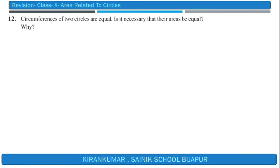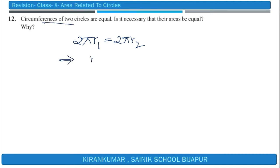Question 12: If the circumferences of two circles are equal, is it necessary that their areas are also equal? Let r₁ and r₂ be the radii of the two circles. Since their circumferences are equal, 2πr₁ = 2πr₂, which implies r₁ = r₂.